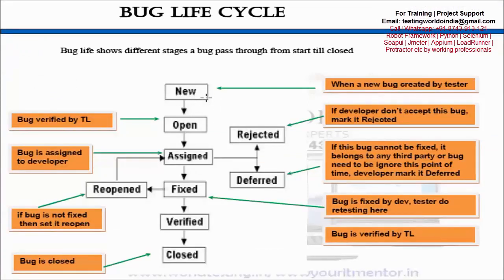When a new bug is created by the tester, the status would be 'new'. Now, as per standards, whatever bug is reported by any tester, the lead of the testing team will have to verify it. As a lead, I verify whether this bug is correct or not. If I find it's a valid bug, I will set the status to 'open'. My tester reports the bug, and as a lead I verify it — if correct, I set it open.